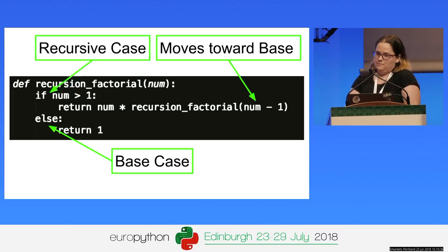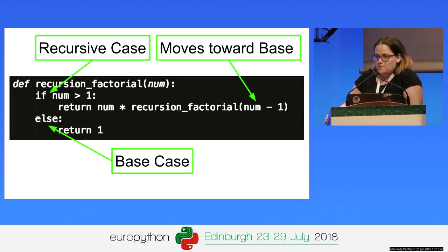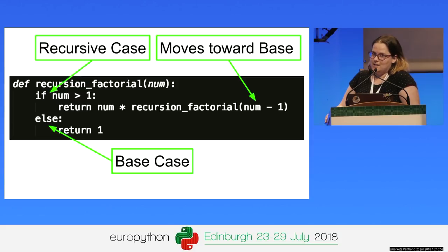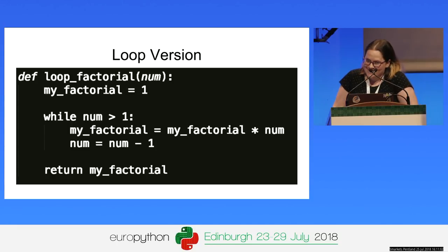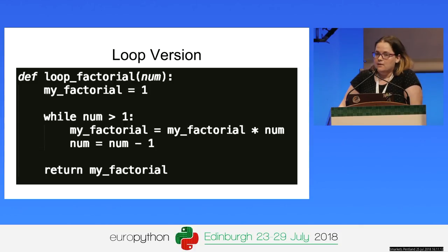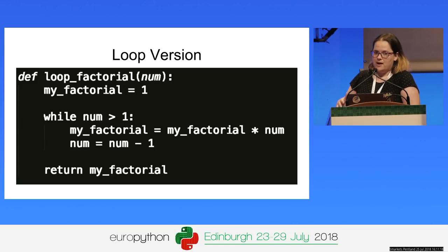The third feature is that the function moves toward the base case. You can see this where recursion_factorial is called for 1 less than it was previously called, moving us closer and closer to being equal to 1. By the way, anything you can program recursively you can also write non-recursively. Here's an example of what the factorial problem looks like solved without recursion — it works fine, just maybe a little less elegant than the recursive function.